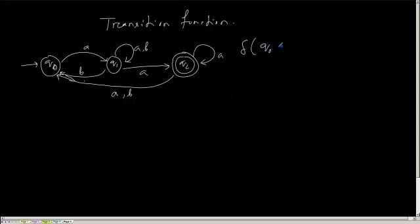Suppose I am in starting state Q0 and I get the input symbol A — what will be the output of the transition function? It is written as a set, because it is not a single state, it can be a set of states. So it is {Q1}.